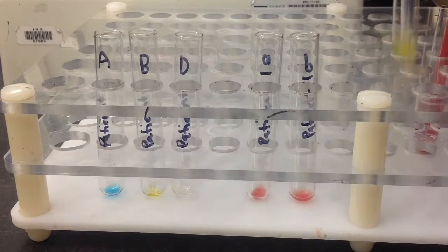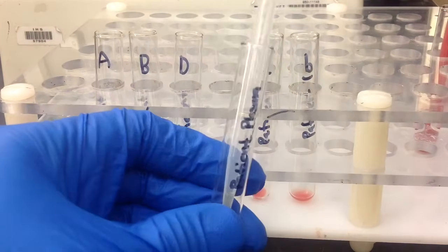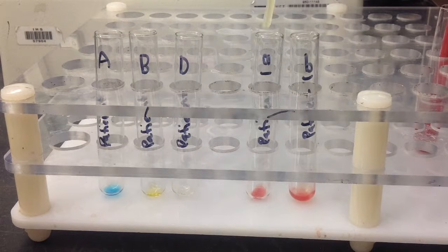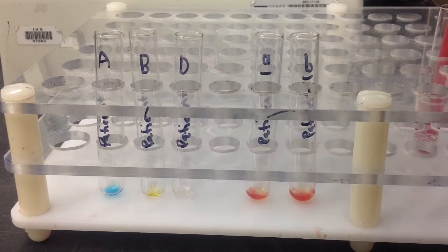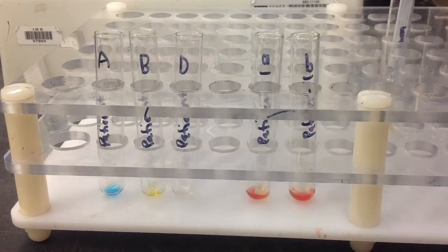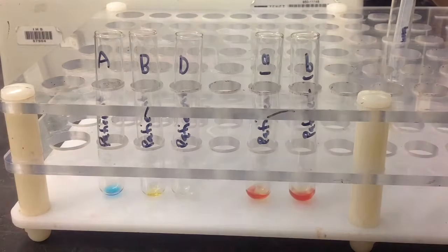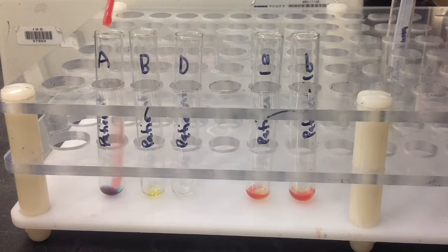And then from here, I go ahead and start with the plasma. And for plasma, you're going to add 2 drops of patient plasma to each one of the reverse tubes or the reagent red cells. And then with the patient red blood cells, it's just 1 drop in each of the anti-sera tubes.